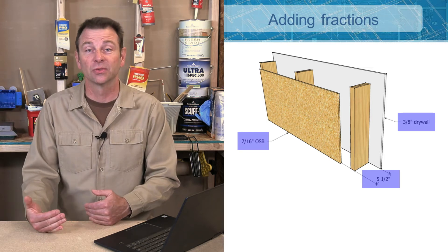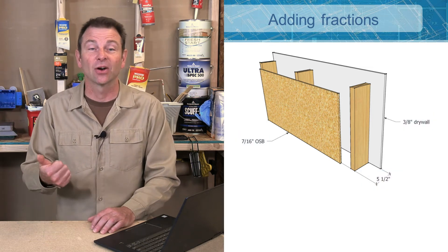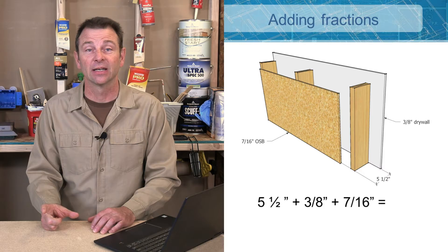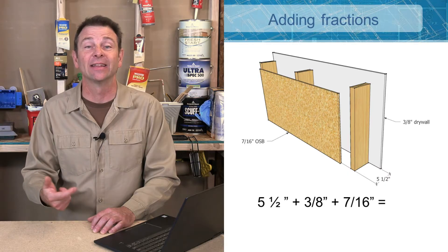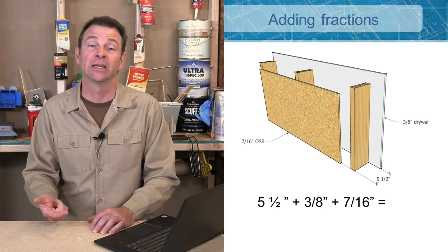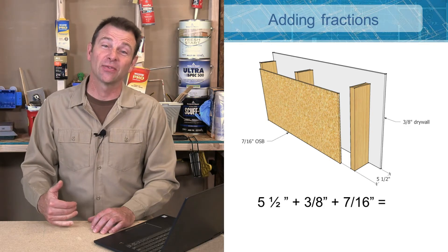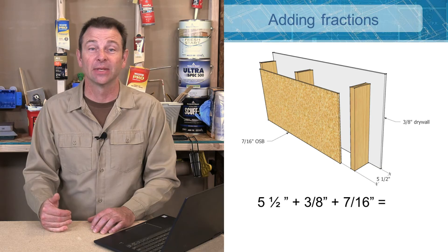The question is, when we put all those together, what is the total dimension of them? So we have to take our 5½ inches of our stud, we have to add to that the 3/8 of the drywall, and then add the 7/16 of the OSB. So what we need to do is we need all of these fractions to share a common denominator.